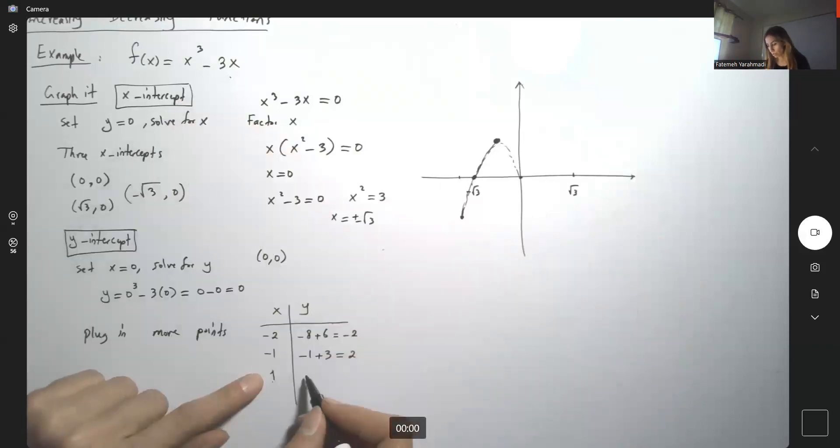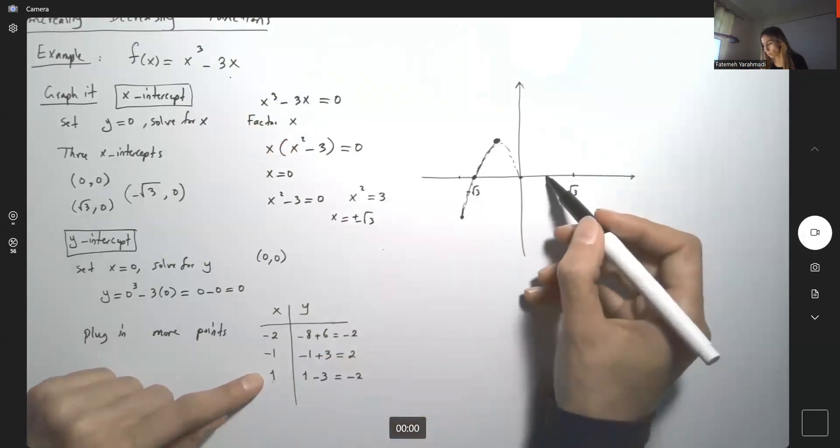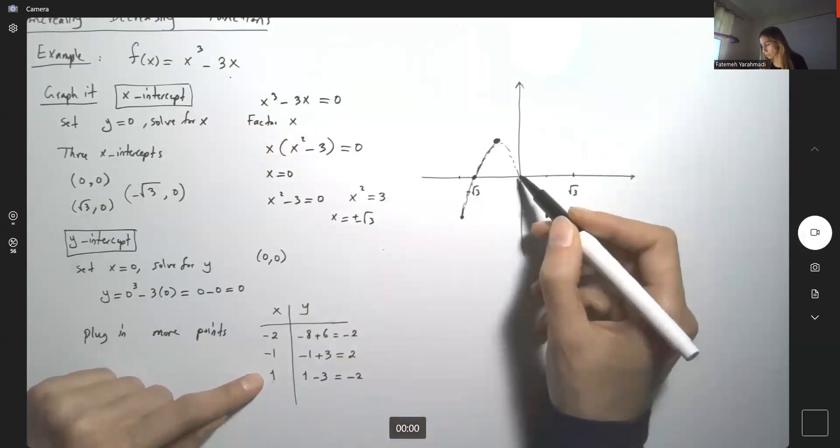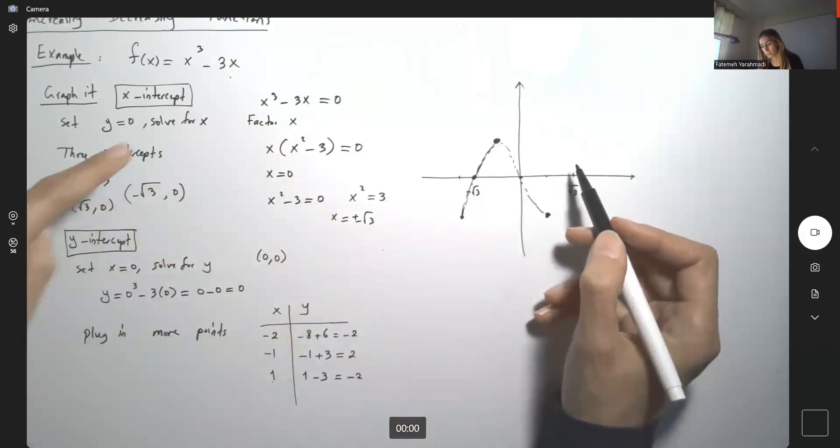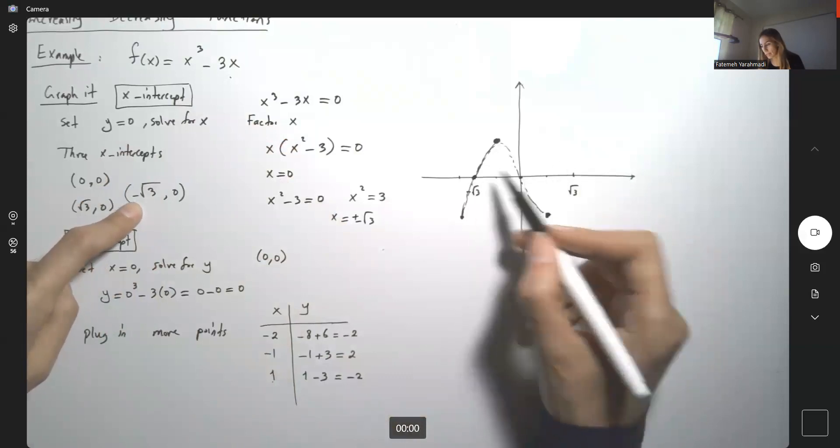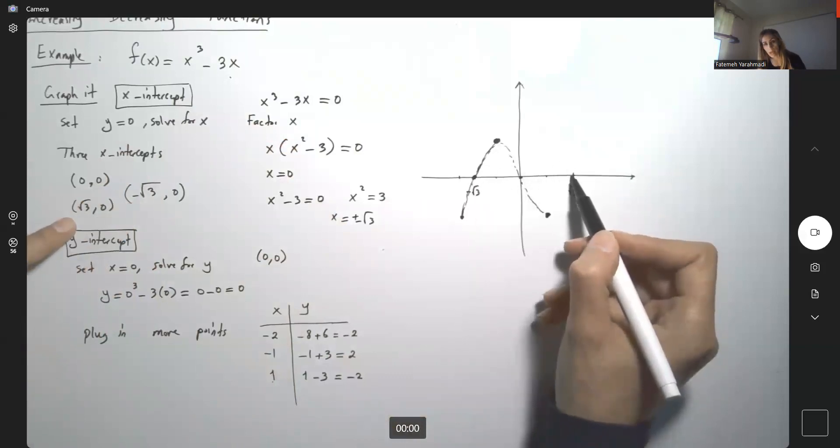If I plug in 1, I get 1³ = 1, minus 3 = -2. At x = 1, y = -2, which is down here. Then I know at -√3 I have 0, and at √3 I have another 0. So it moves up.